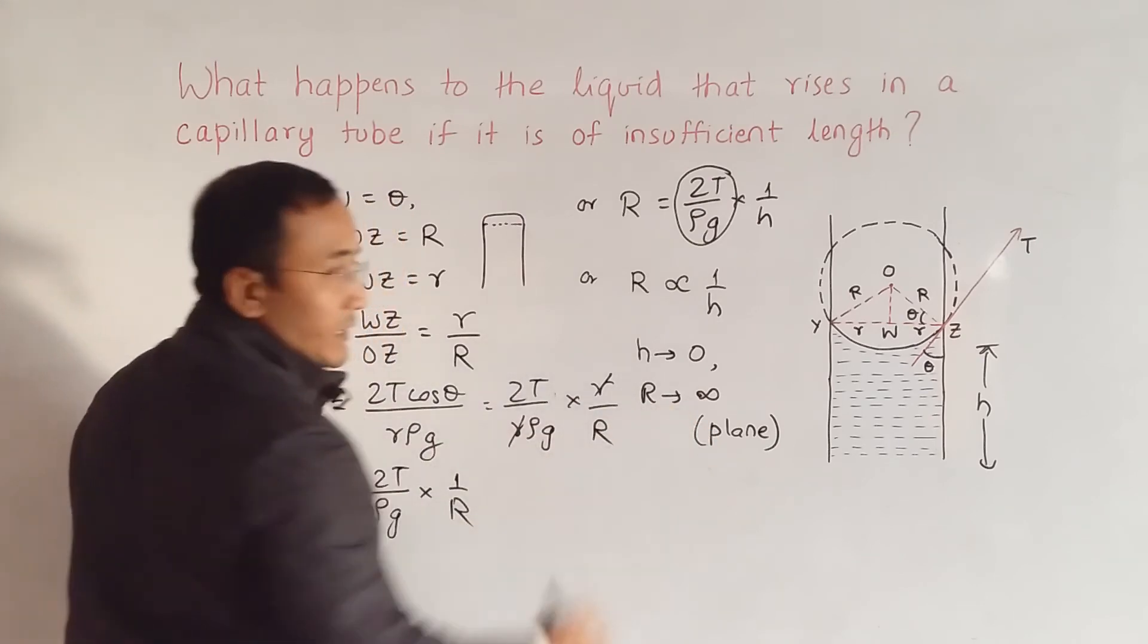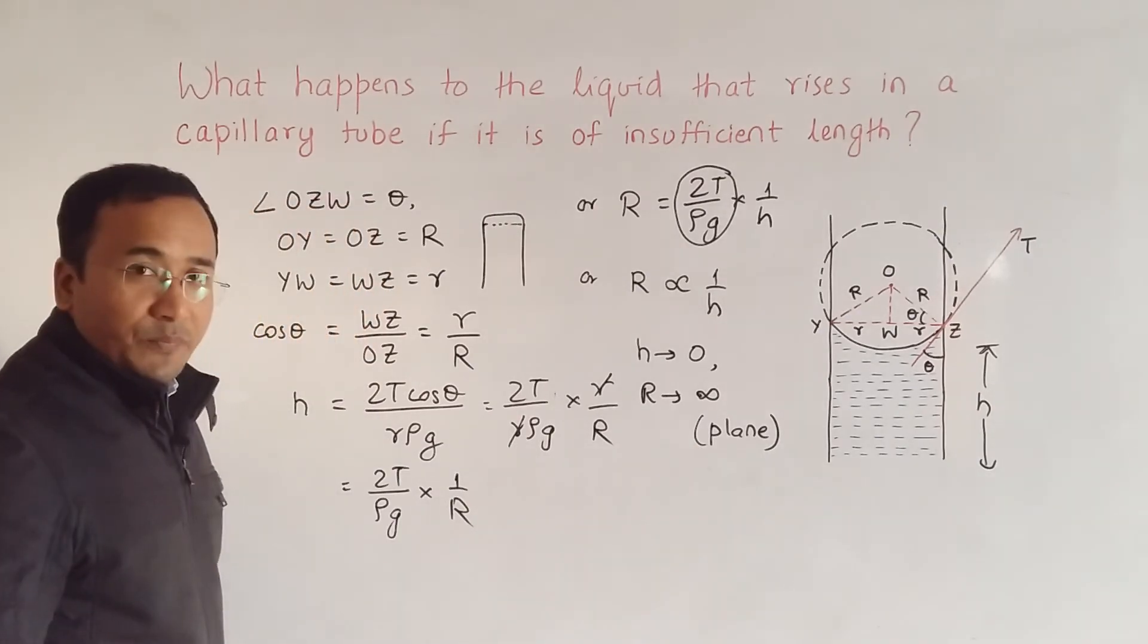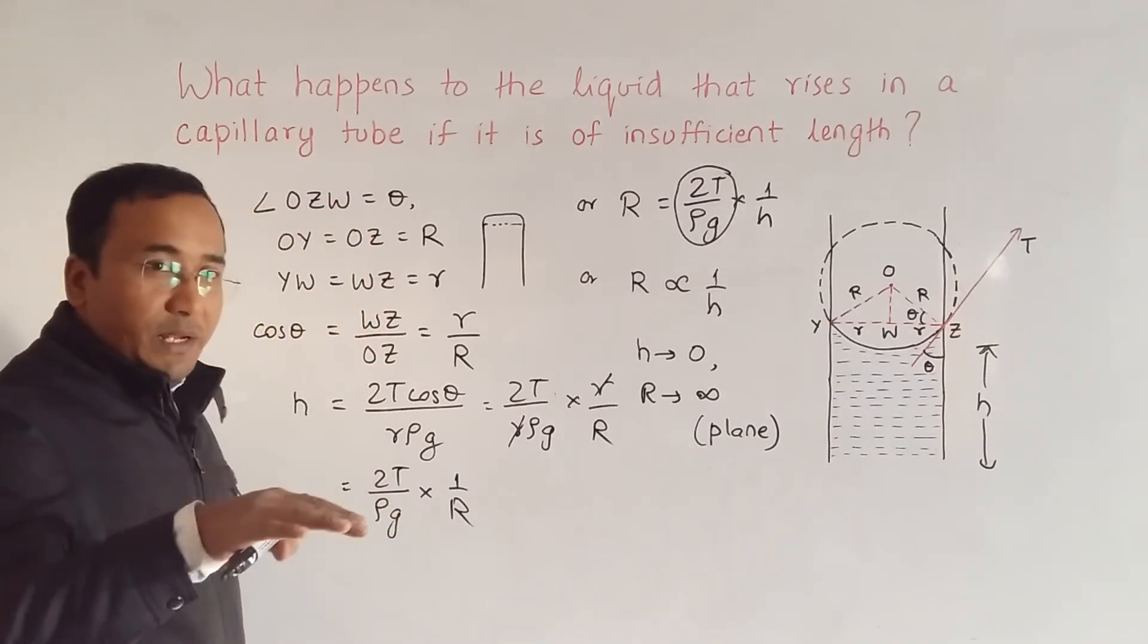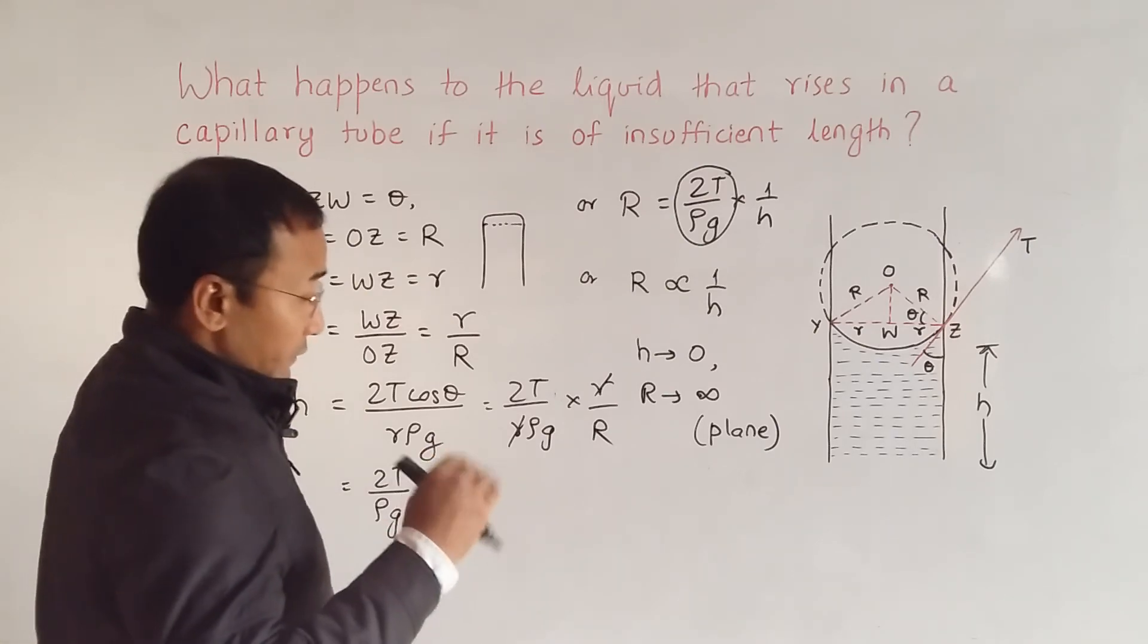But here what we have is when h becomes 0, the maximum R can become is infinite - it can become like this, so that's why there is no question of overflow. The maximum it can become is planar, no question of overflowing of the liquid.